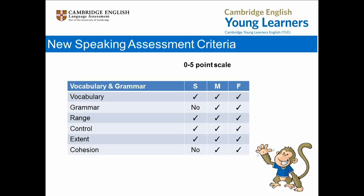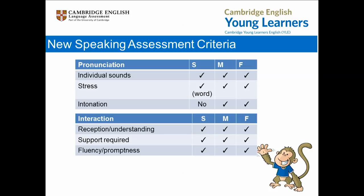Now let's move on to the other criteria used to assess candidate speaking. Pronunciation at starters is assessed at the level of individual sounds and word level stress. At movers and flyers, stress is assessed at word, phrase and sentence level, reflecting our expectation that children will be beginning to produce extended speech at the higher levels. Similarly, intonation is not relevant to starters level candidates, but it is at movers and flyers, where we're expecting candidates to produce more extended speech.